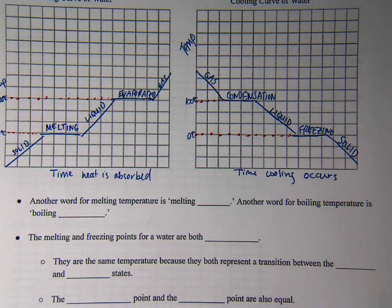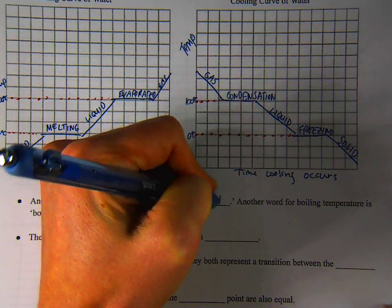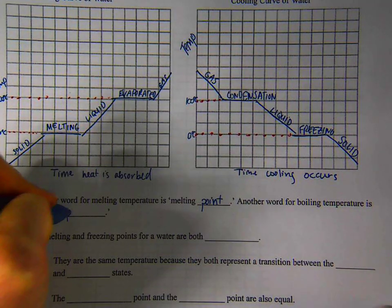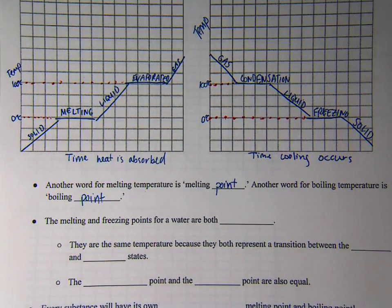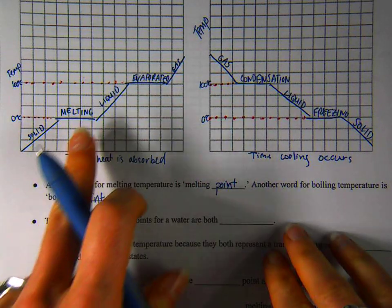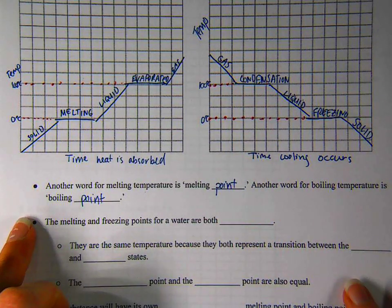So another word for melting temperature, you've heard me say this several times, is melting point. Another word for boiling temperature is boiling point. I want you to be familiar with these and you should be writing down everything that I write down. The melting and freezing points for water, check out your graph, melting point, freezing point, they're both at 0 degrees Celsius.